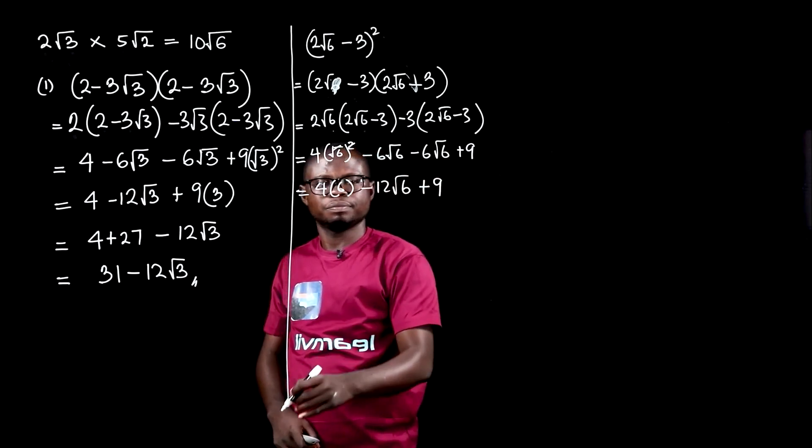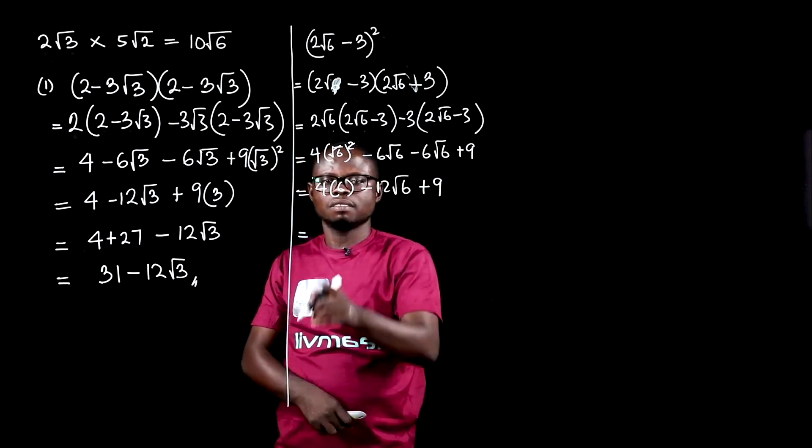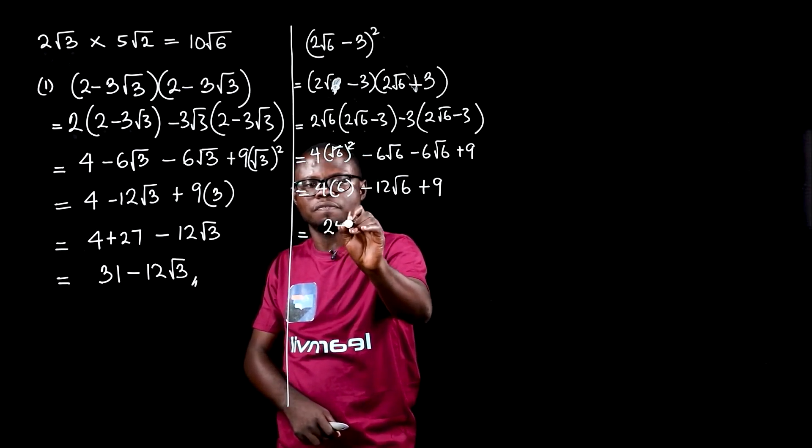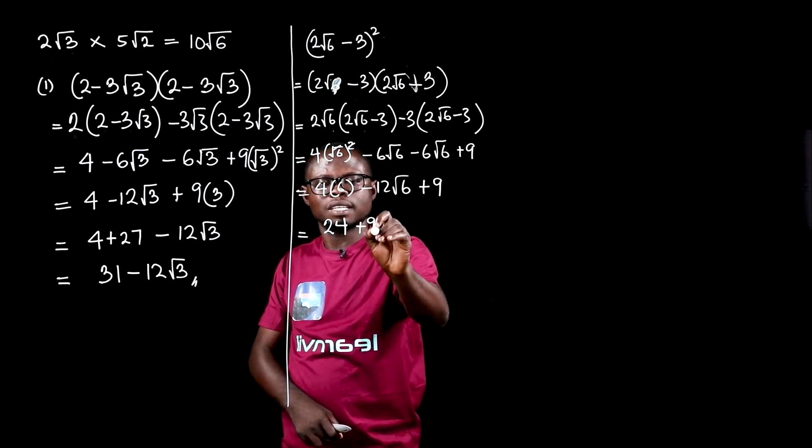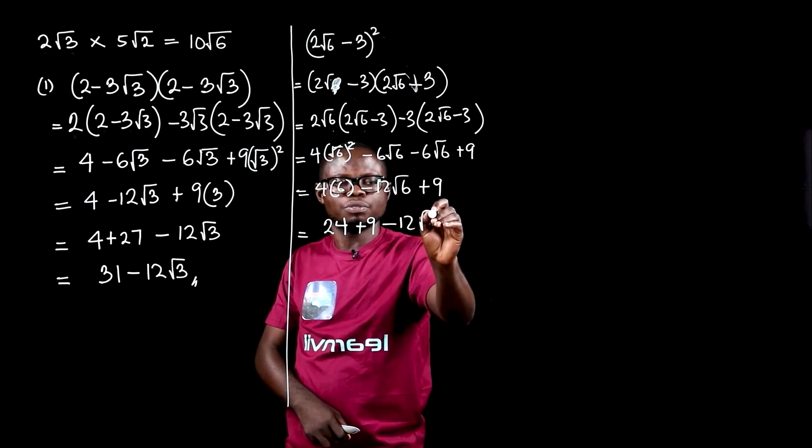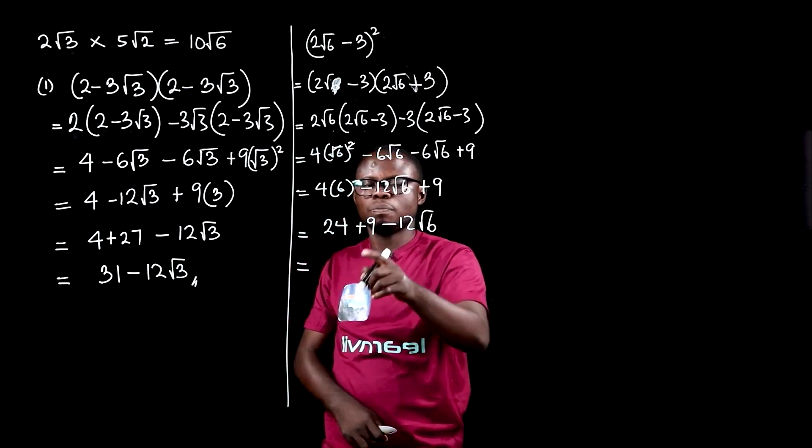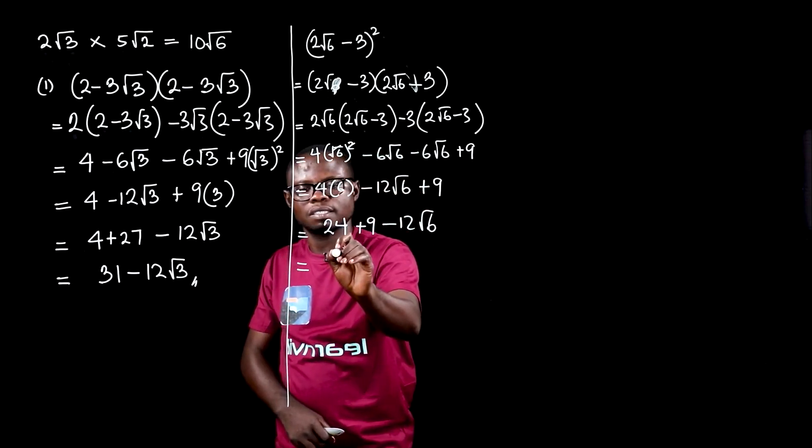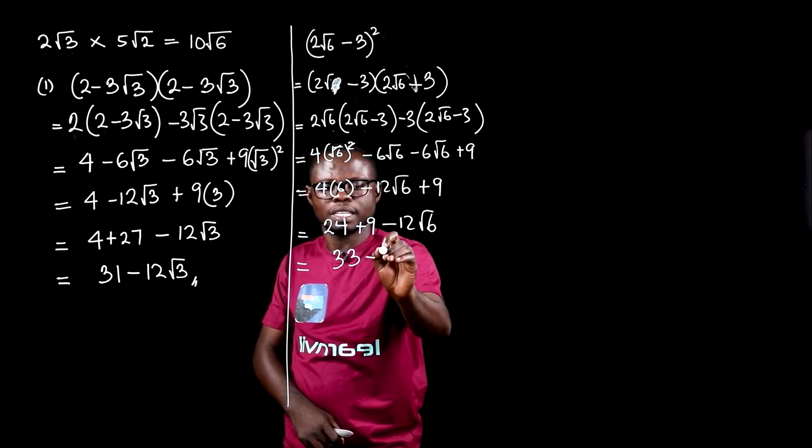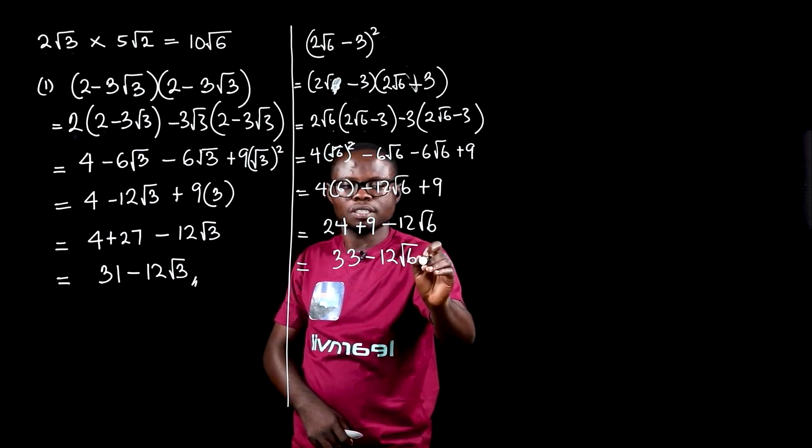This gives us 4, 6 is 24, plus 9 minus 12 root 6. This becomes 24 plus 9 is 33 minus 12 root 6.